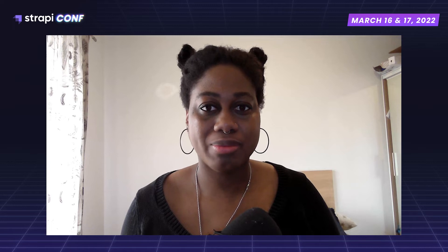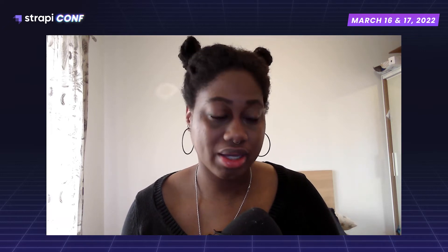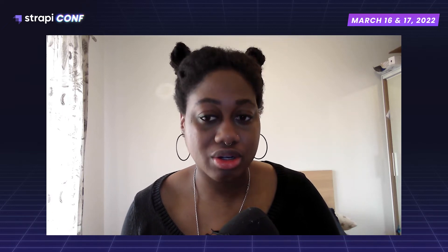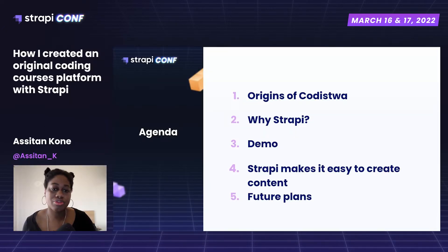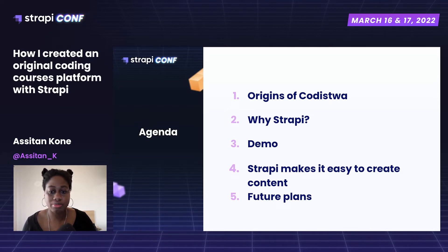Hello, I'm very happy to be here today. My name is Asitan Kone, I am the CEO and founder of Codistoire, and I'm on Twitter — you can find me there. I'm here today to talk to you about how I created an original credit courses platform with Strapi. I'll cover the origins of Codistoire, why Strapi, a demo, how Strapi makes it easy to create content, and the future.